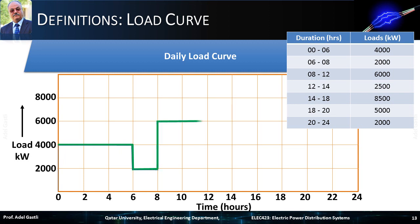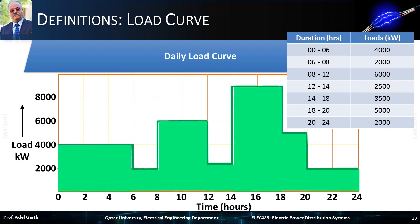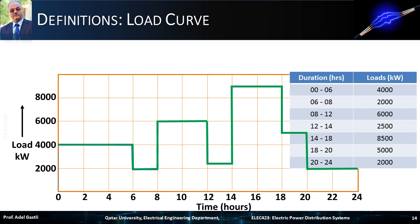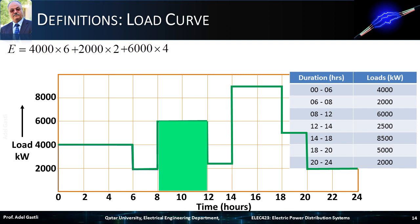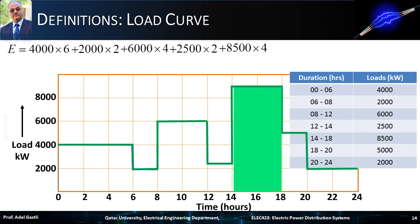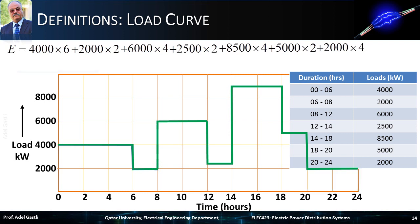Based on the given load data, the load curve is plotted showing the load in kW and its corresponding duration for a whole day, as depicted from this table. The area under the curve represents the energy that has to be generated by the power station in a day to meet the load demands. The total energy generated during 24 hours equals 4,000×6 + 2,000×2 + 6,000×4 + 2,500×2 + 8,500×4 + 5,000×2 + 2,000×4 = 109,000 kilowatt-hours.